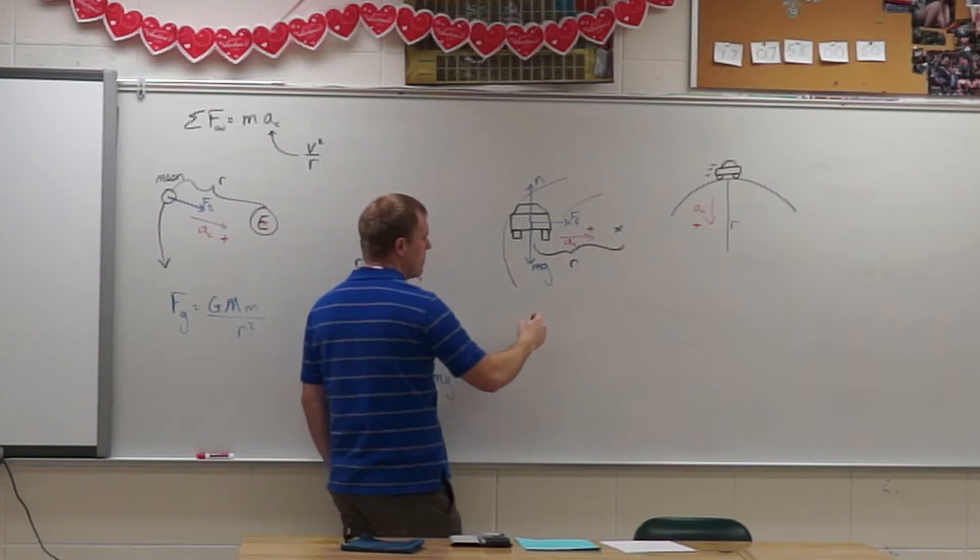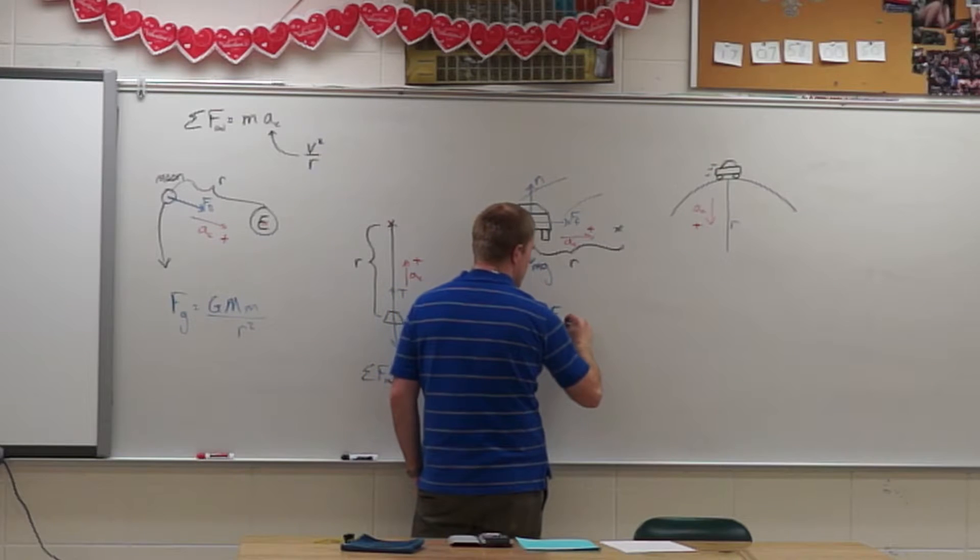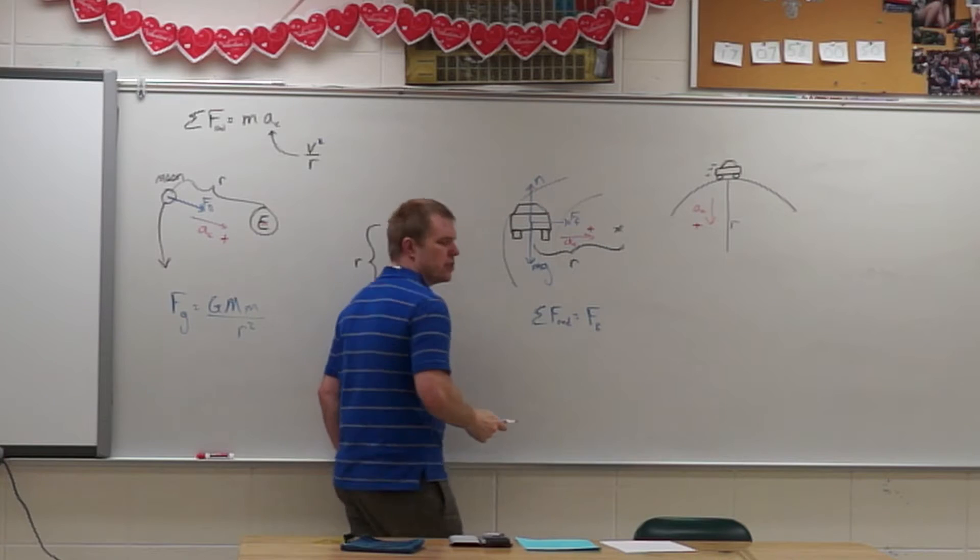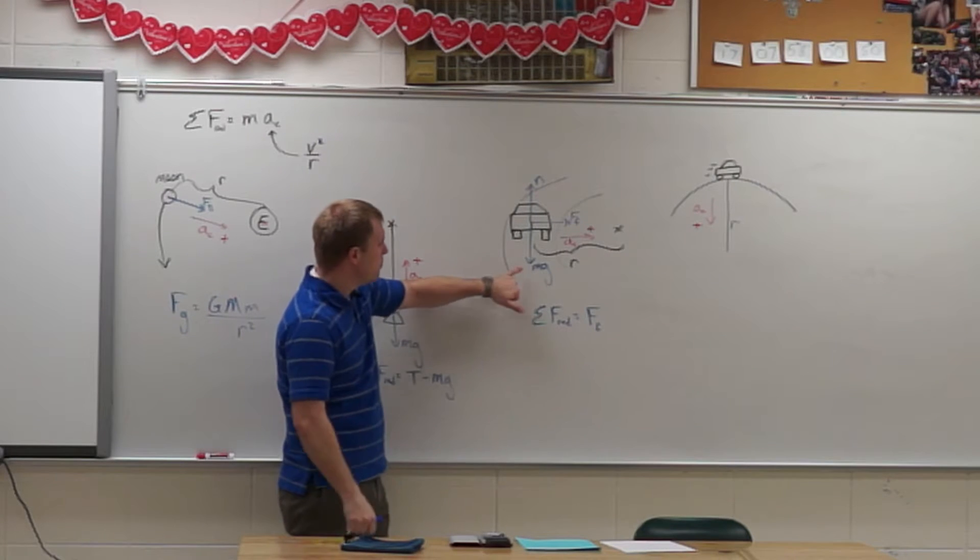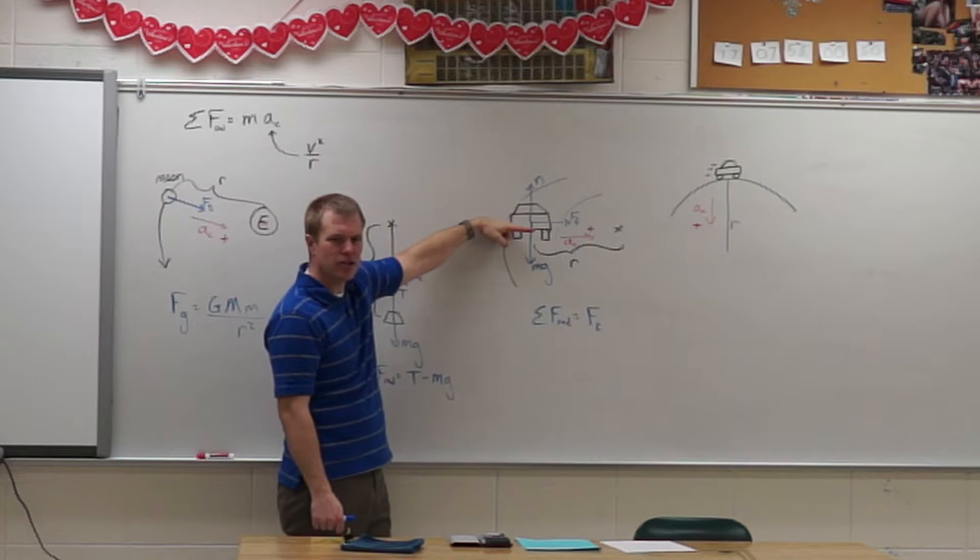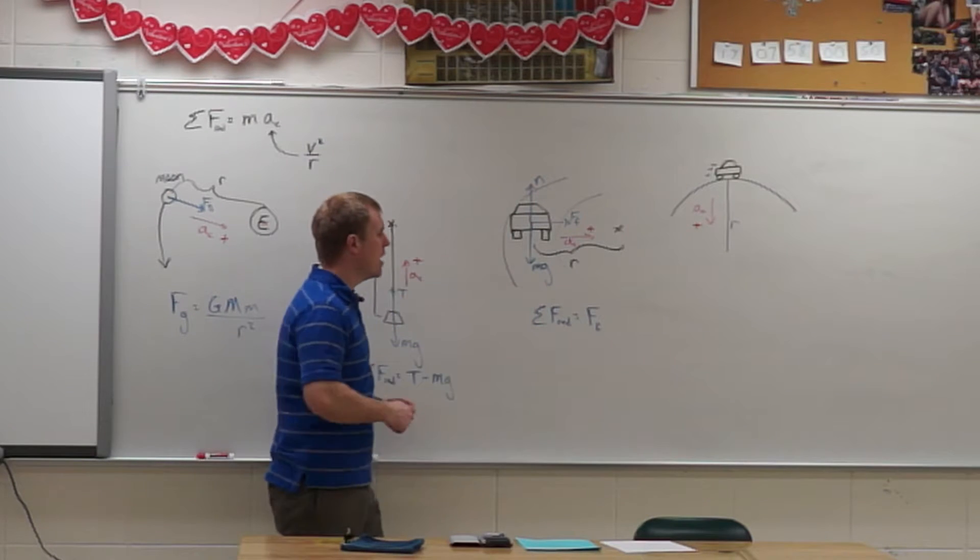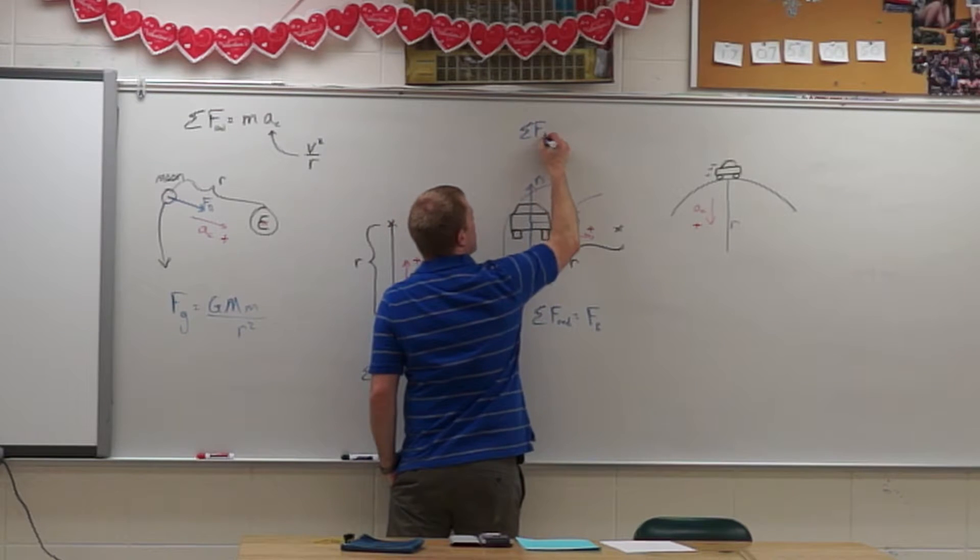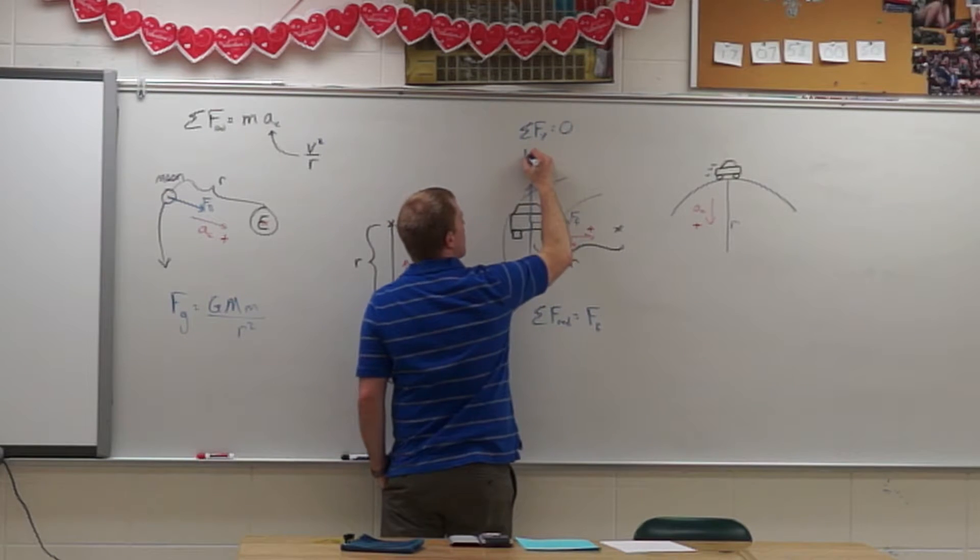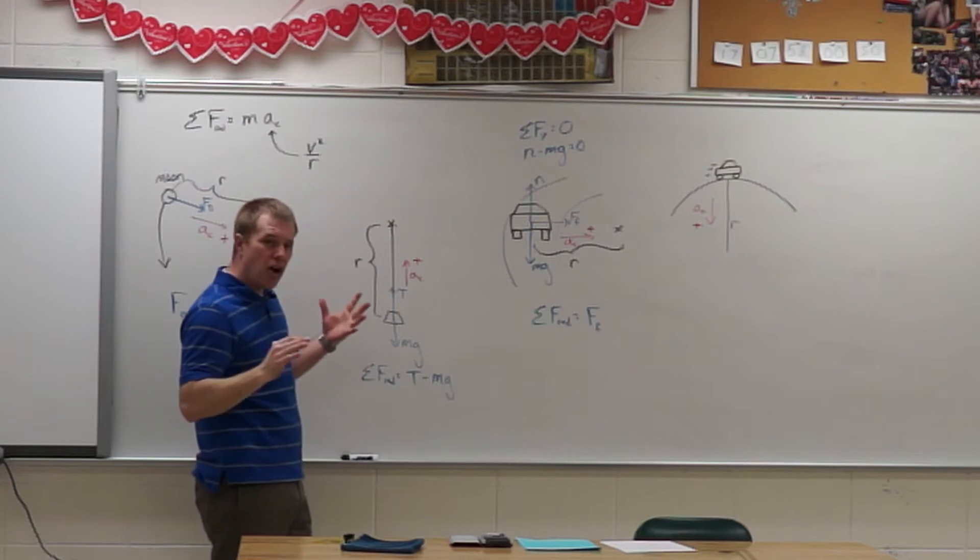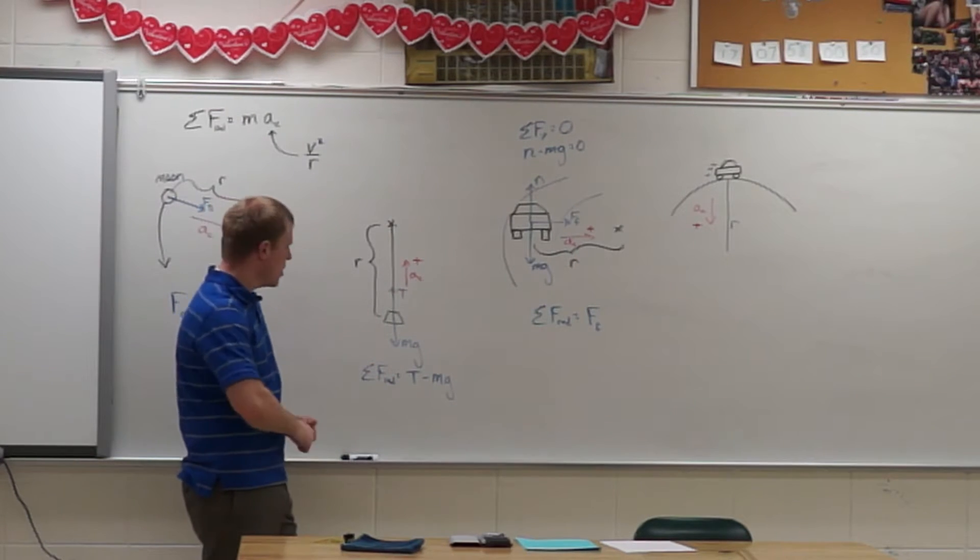So now when I sum up the forces in the radial direction I only have the force of friction. You don't sum up the forces Mg and normal force because they're not pointing in the radial direction. They're pointing in my y direction. So I would include those in the sum of the forces in the y direction which is equal to zero. And so I have normal force minus Mg equals zero. So it's all about that radial direction.